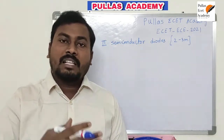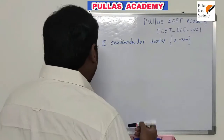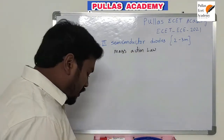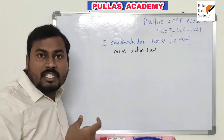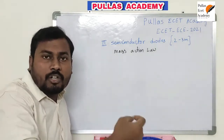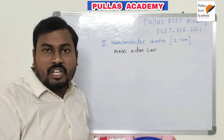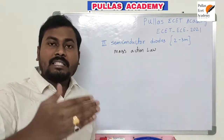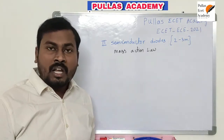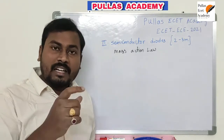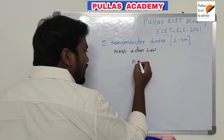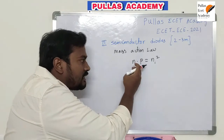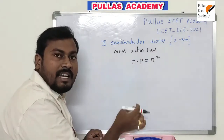First, let me start with mass action law. According to mass action law, the product of electron concentration and hole concentration is a constant at any given temperature. It is given by N multiplied by P is equal to Ni squared. N is the electron concentration, P is the hole concentration, and this product is equal to Ni squared. This is valid at any given temperature.